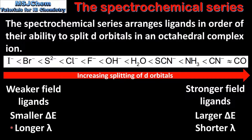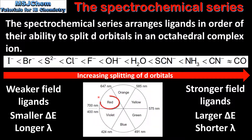A smaller energy difference corresponds to a longer wavelength of light being absorbed, and a larger energy difference corresponds to a shorter wavelength of light being absorbed. For example, a complex ion that has weaker field ligands will absorb a longer wavelength of light such as red, and a complex ion that has stronger field ligands will absorb a shorter wavelength of light such as violet.